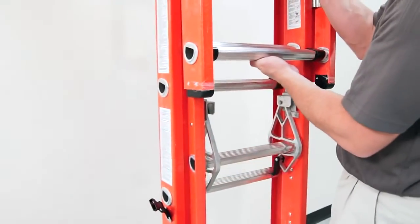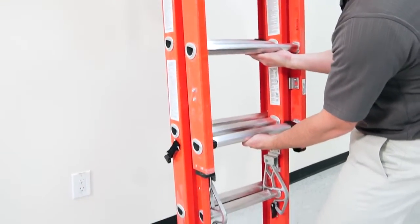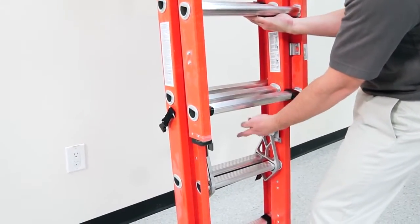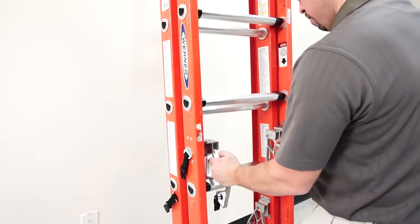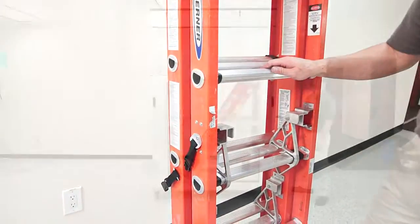To lower the ladder, go in reverse order. Lower the second section before lowering the first section. To disengage the rung locks, either lift a section of the ladder high enough for the rung locks to disengage or use the handles on the rung lock to pull the locks forward.